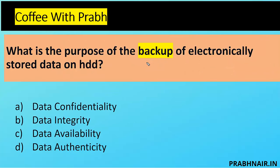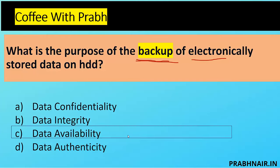Next question: what is the purpose of backing up electronically stored data on a hard disk drive? The first keyword is backup — why do we take backup? If a file is deleted, we can recover it. Data confidentiality: we do protect backups with passwords, but that's not the primary purpose. Integrity is a good feature to have in backup, but we never take backup purely for integrity. Availability — when a file is deleted, we recover data through backup, so backup is all about availability. The answer is C, data availability.